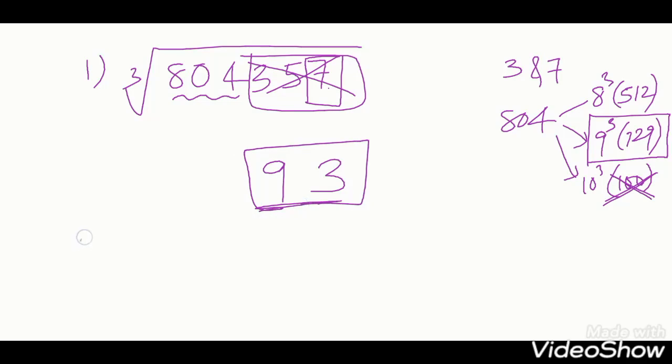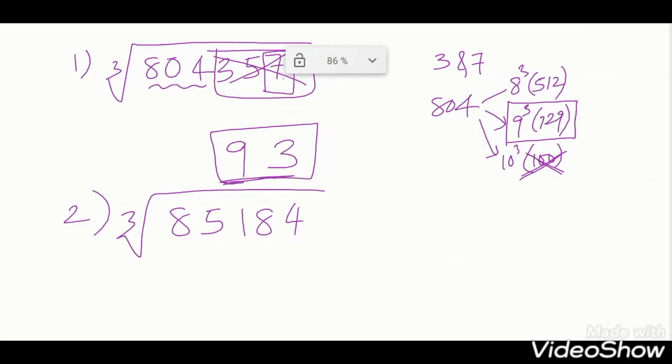85184. Cube root of 85184. How to find? Last digit we have to see first. Last digit is 4. 4 is the same digit. 4 coming means 4 only will come as unit place. Next, we have to neglect last 3 digits.